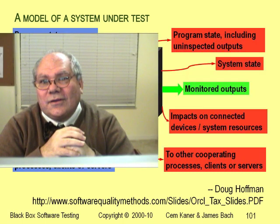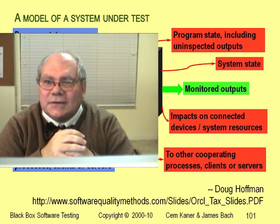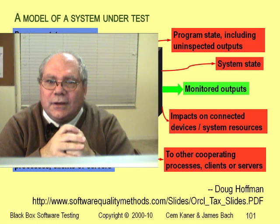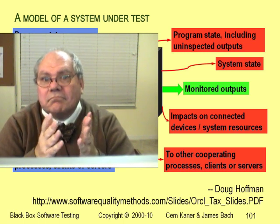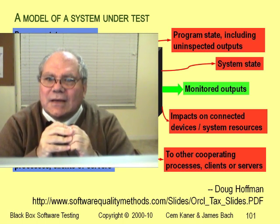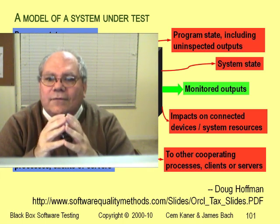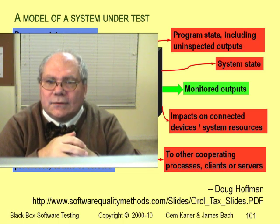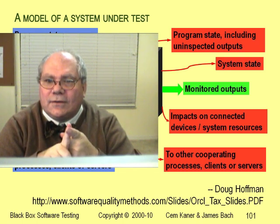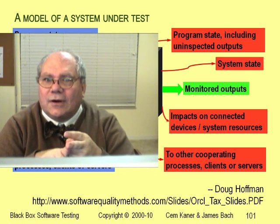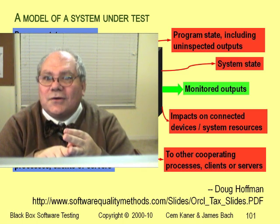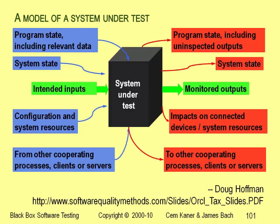In addition, we don't look at all the outputs. Imagine a program that adds numbers: we give it 2 plus 3 and it gives back 5. Does that pass the test? Maybe — but what if it took 6 hours of calculation to get that result? How often do you measure the time it takes? What about the amount of free memory at the end of the test, fragmentation of the hard disk, or whether the program started your computer sending out spam email? Many automated tests are blind to all of this — as long as they eventually get 5 as an answer to 2 plus 3, they report a pass.